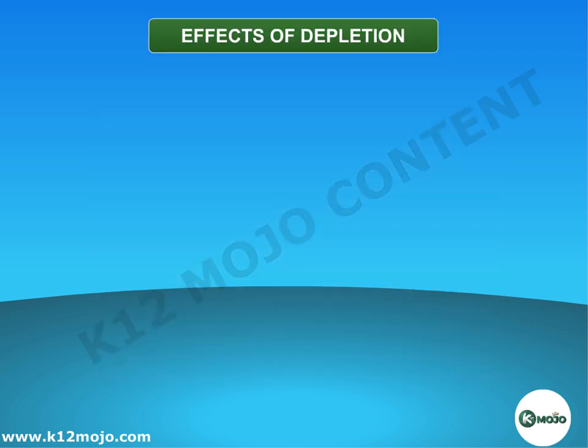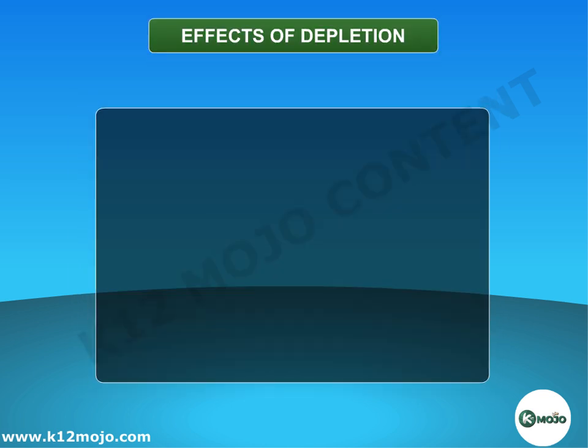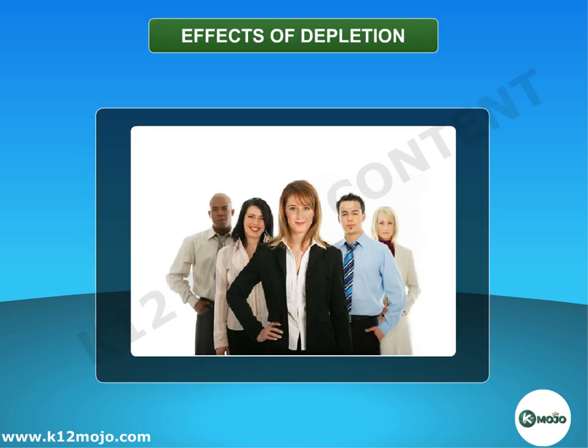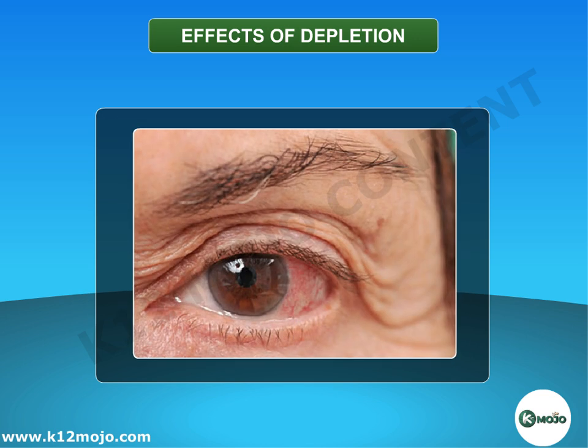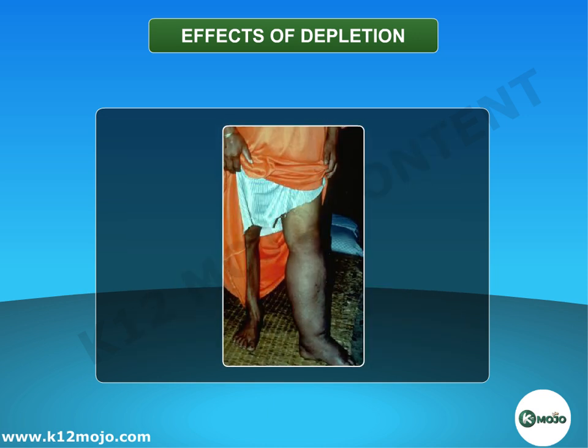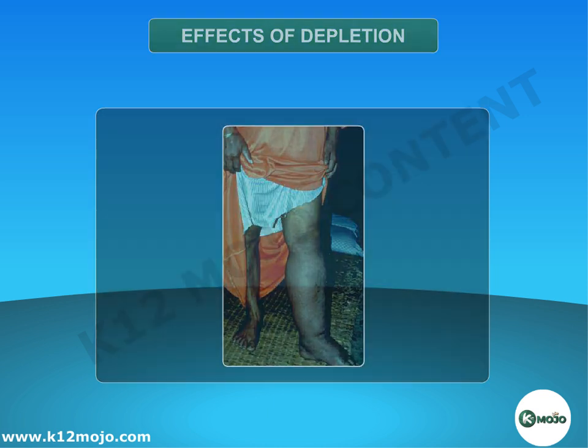Effect of depletion: Excessive exposure to ultraviolet radiation leads to a number of human health problems like skin cancer, eye disease and cataracts, and damages the immune system by lowering the body's resistance to diseases.